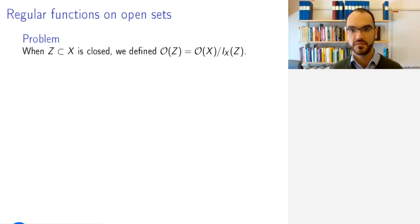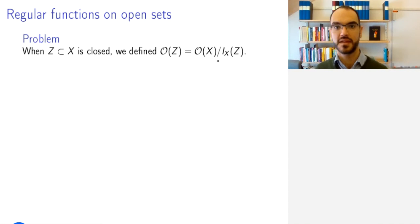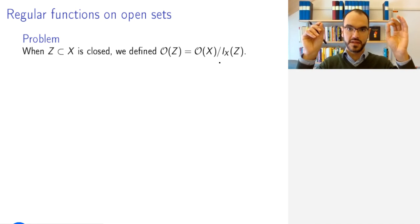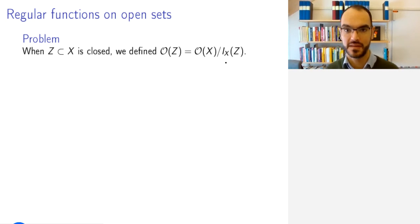Now, we want to define regular functions on open sets. So remember, when you have an algebraic set X and a closed subset Z, we defined the coordinate ring of Z as the quotient of the coordinate ring of X by the vanishing ideal of Z. And the point is that you want to consider the restriction of functions on X to Z. And then two functions will be the same if their difference restricts to something that vanishes on Z. This is why we quotiented this. Now, let's try to do this, but why is it so important that Z is closed?